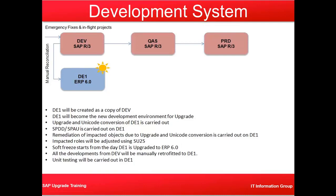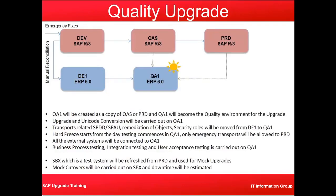All the developments from DEV will be manually retrofitted to DE1 and unit testing will be carried out in DE1. When you build the new DEV system and upgrade it, you make sure SPDD and SPAU are done in the new system and that role adjustment is done using SU25. Then we put a freeze, and after the upgrade is done we manually retrofit all the new developments from DEV into the DE1 system. That is about the development system.